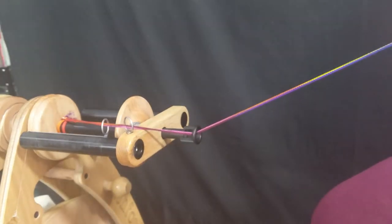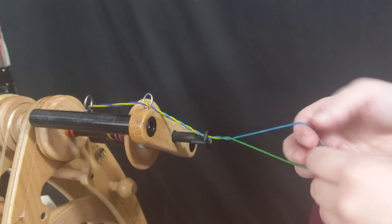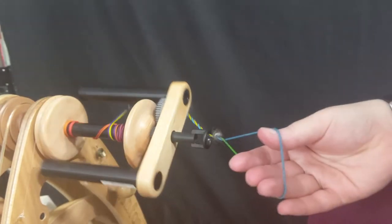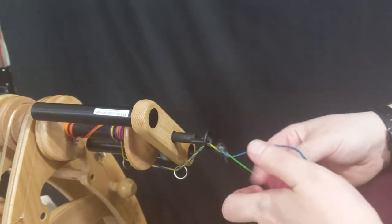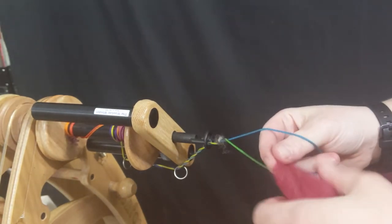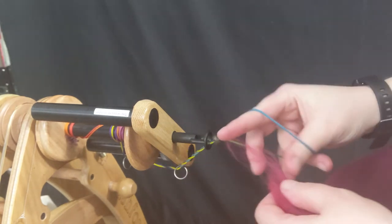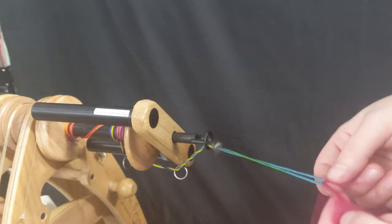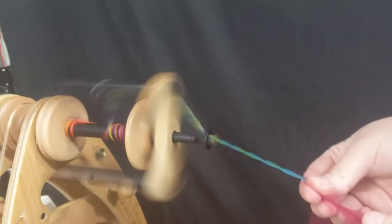So to summarize, choose a leader yarn that is roughly the same thickness as the yarn you want to make. It doesn't matter what type of yarn it is. For most wheels, a 24 to 36 inch long leader is long enough to work with. Attach your leader with not one but two lark's foot knots.